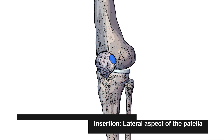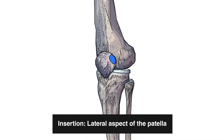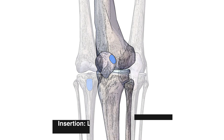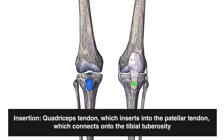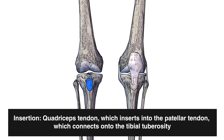Moving on to insertion: the vastus lateralis first inserts on the lateral aspect of the patella. The quadricep muscles all come together to form a common tendon called the quadriceps tendon. This quadriceps tendon then inserts into the patellar tendon — or patellar ligament, depending on how you want to call it — which connects down onto the tibial tuberosity, marked out in blue on the other side.